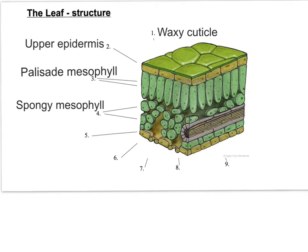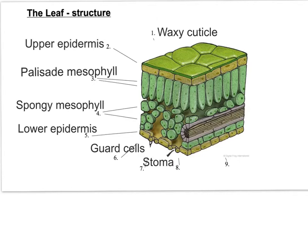Underneath this, the spongy mesophyll cells are more loosely packed. They have fewer chloroplasts because they get less light, but they have lots more air spaces to allow the diffusion of gases in and out of the leaf and around to the palisade mesophyll. The lower epidermis is a single layer of cells which also contains guard cells. The guard cells surround a pore or stoma, and are able to open and close to allow gases to diffuse in and out of the leaf. The stoma is the hole or pore formed when the guard cells are open. Finally, xylem vessels bring water to the leaf, which is needed for photosynthesis and for keeping cells turgid.